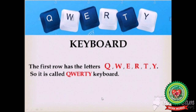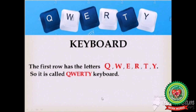Now I am going to tell you one thing — keyboard is also known as QWERTY keyboard. Because the first row of letters on your keyboard starts with Q, W, E, R, T, Y. Alphabet keys are not given in A, B, C order on the keyboard. All keyboards start with QWERTY. You must have noticed that the keyboard on your phone also starts with Q, W, E, R, T, Y. That's why the keyboard is also called the QWERTY keyboard.